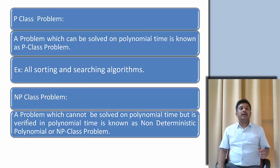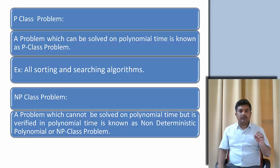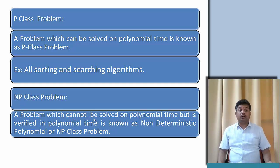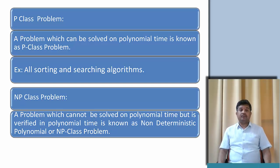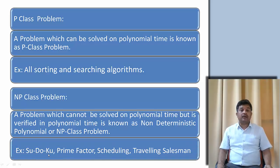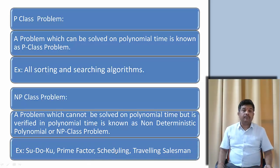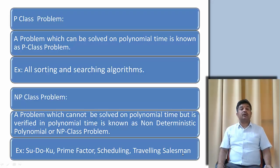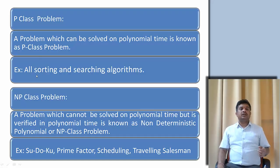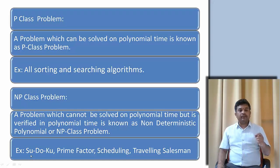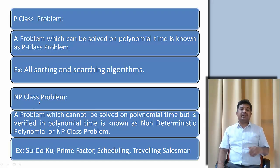Now let us see what is an NP class problem. NP class problems are those problems which cannot be solved using polynomial time but can be verified in polynomial time. For example, the Sudoku problem, prime factor problem, scheduling problem, travelling salesman problem — all these problems are examples. There are many more in this class.